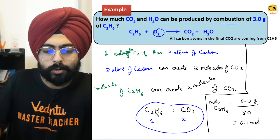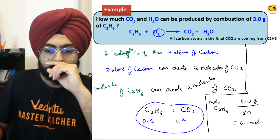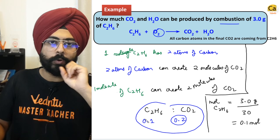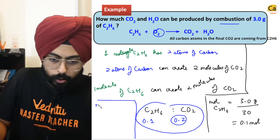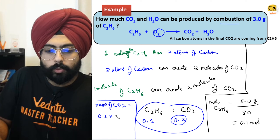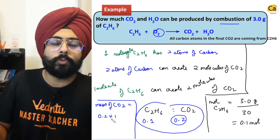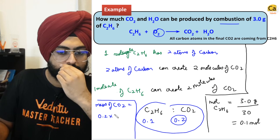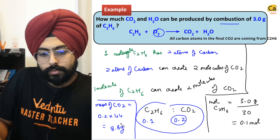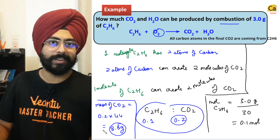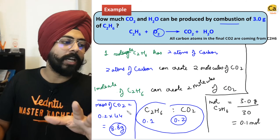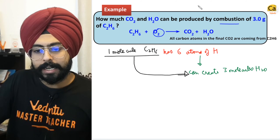If 0.1 moles of C2H6 are present, I can get 0.2 moles of CO2. Mass of CO2 is 0.2 × 44 = 8.8 grams. Starting from 3 grams of C2H6 and combining it with oxygen, I can get a maximum of 8.8 grams of CO2. Similarly, 0.1 mole of C2H6 will give me 0.3 moles of water.